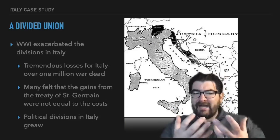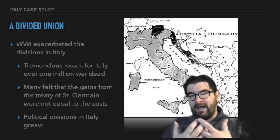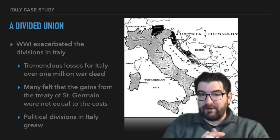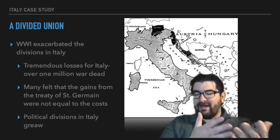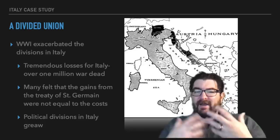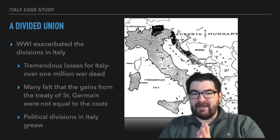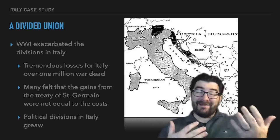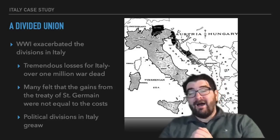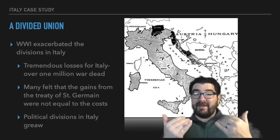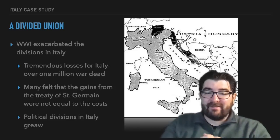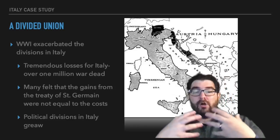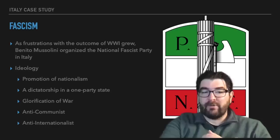This divided union will only be exacerbated by the First World War and Italy's experience in it. Italy suffers tremendous losses during the war as it joins on the side of the Entente powers, fighting largely against Austria-Hungary in its north. When the war came to an end, Italy had lost over a million war dead. Many Italians felt that the gains Italy received in its north and along the Adriatic coast on the Balkan Peninsula were not equal to the costs Italy expended, and this grew political divisions even further within Italy.